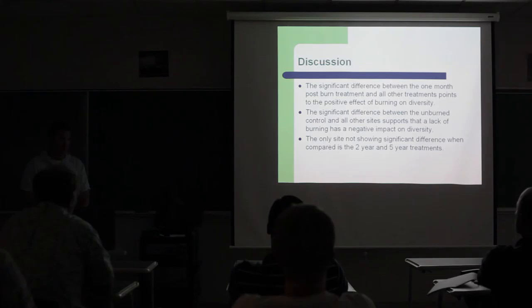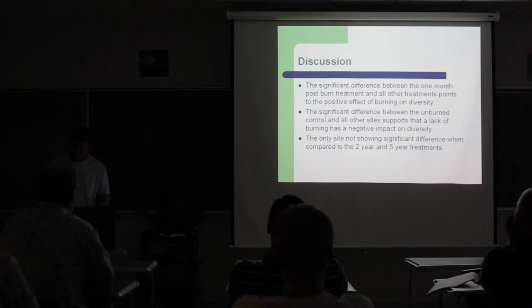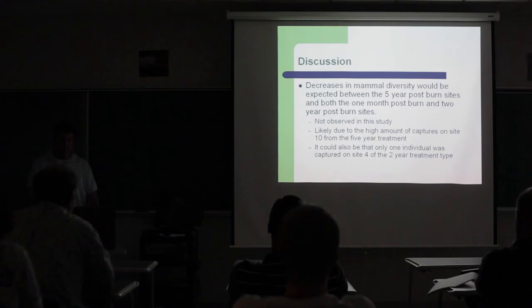The significant difference between the unburned control and all other sites shows that lack of burning has a negative impact on diversity. You have a mature forest, you have very little ground vegetation. Like on all of my sites that were 15 plus years, there was very, very little ground vegetation. It's real open floor, just mainly leaf cover. It's been shown that that supports a relatively low density of small mammals.